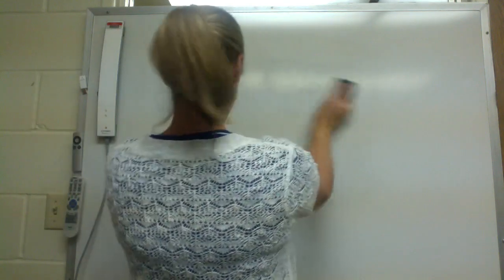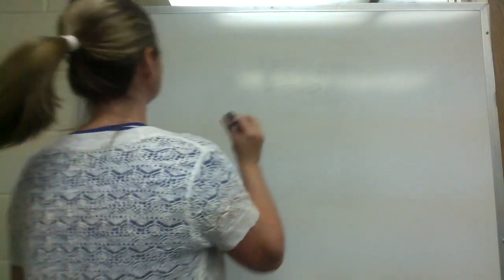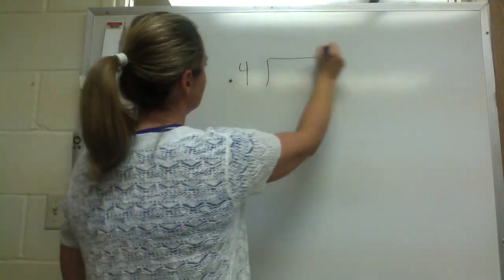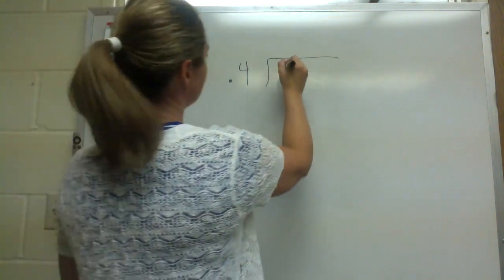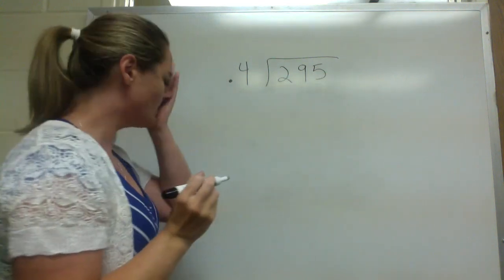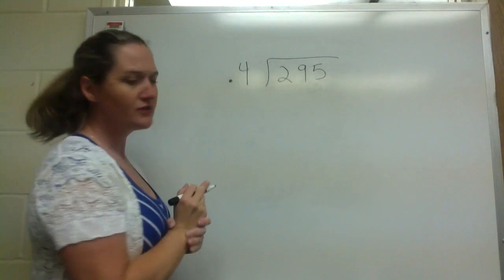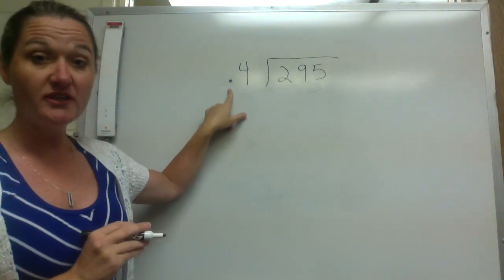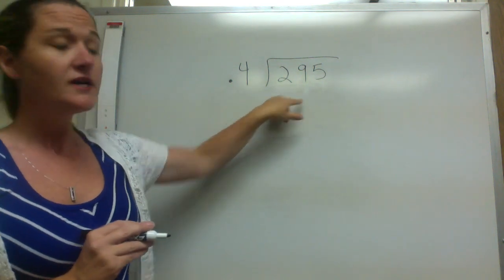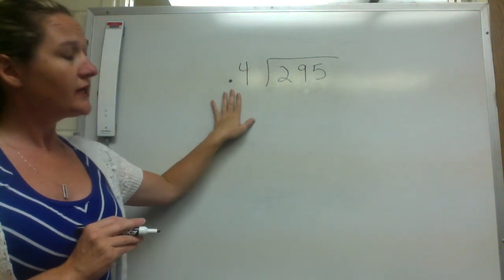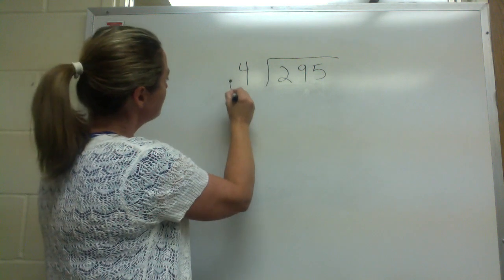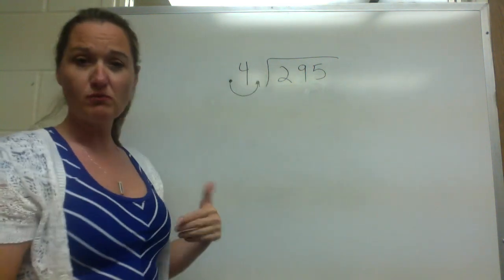All right, let's change it up a little bit. Let's do one where we have a decimal going into the divisor — 0.4 going into 295. So here's the first situation where we have a decimal in our divisor. This is the number dividing into 295. We cannot have this — it has to be a whole number. So what we do is we get this decimal and just pick it up and move it to the end, because if we have a decimal at the end, like four-point-something, that's a whole number — that's four.